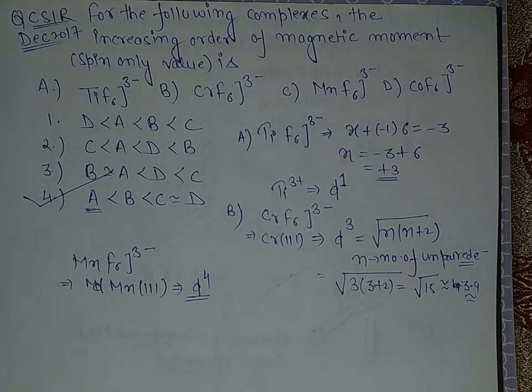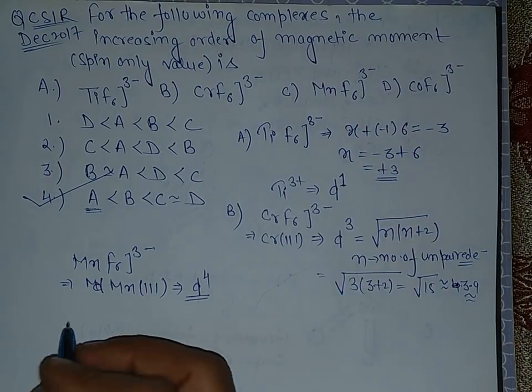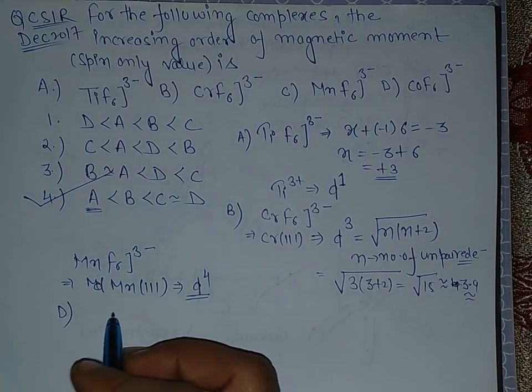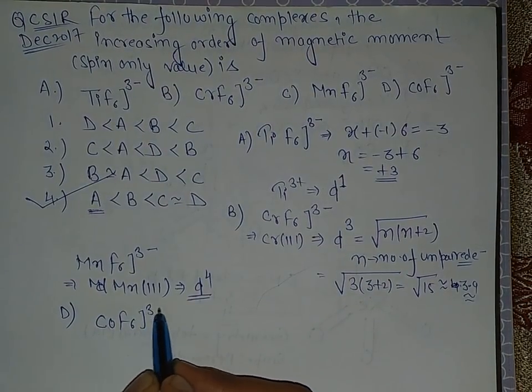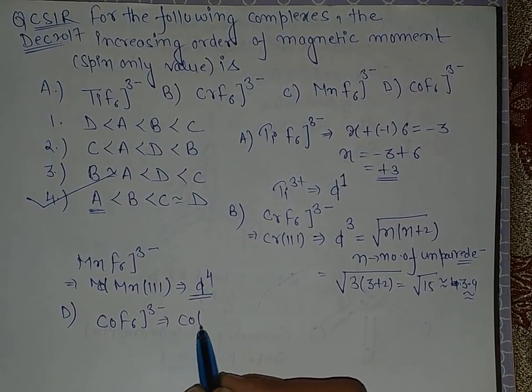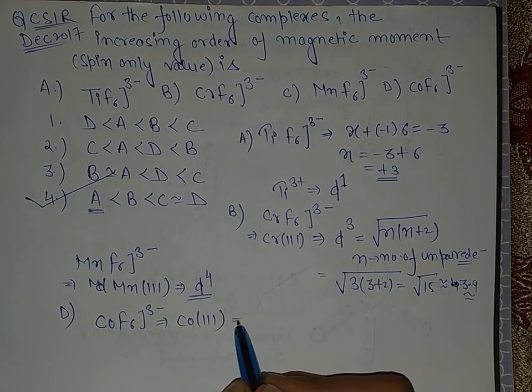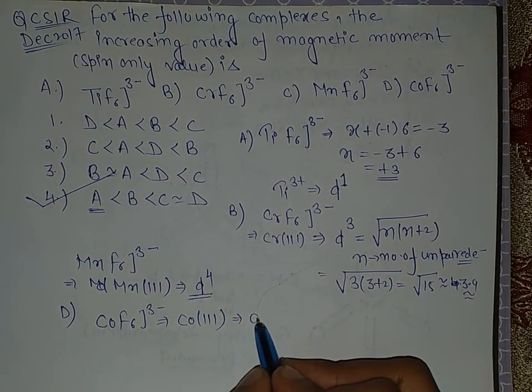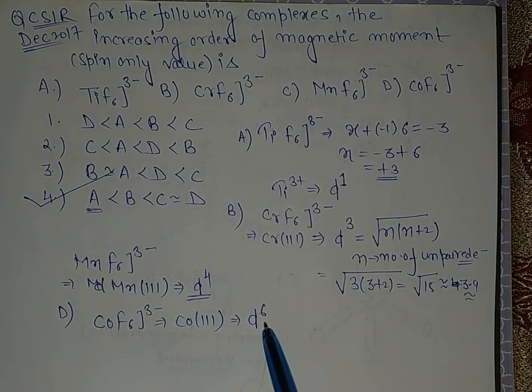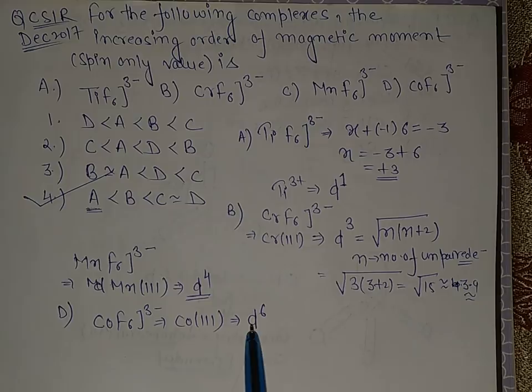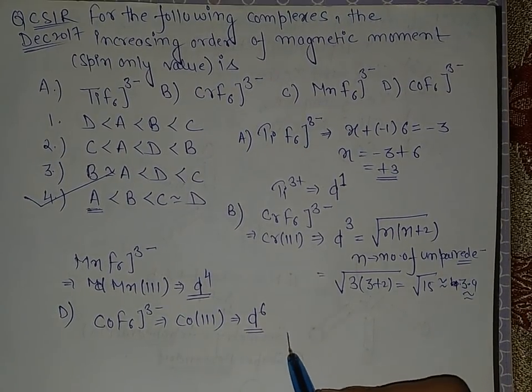Now let's check the last option D. This is CoF6 3-. Again, cobalt is in +3 oxidation state. That means it will have D6 electrons.